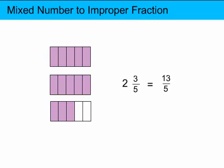So the mixed number 2 and 3 fifths is equal to the improper fraction 13 fifths. They're equivalent — they represent the same value. And every mixed number can be converted to an improper fraction.